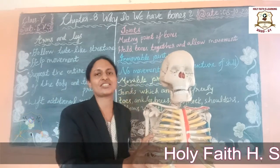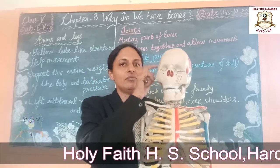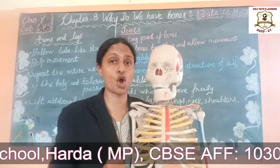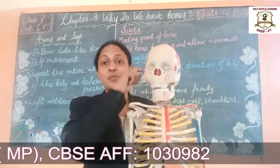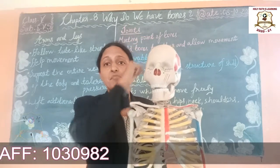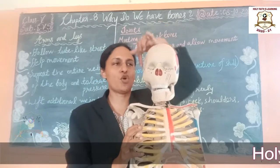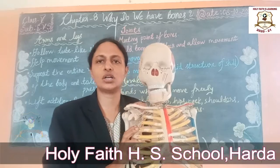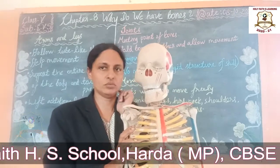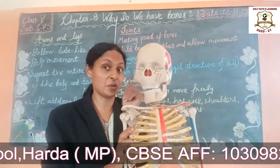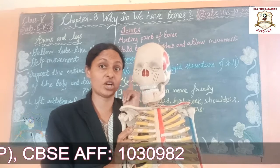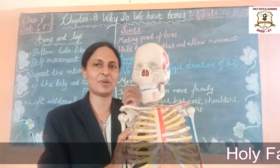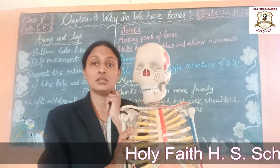An example of immovable joints is the rigid structure of the skull. We already learned about the skull — it is a rigid, hard and strong structure formed from several flat bones joined together. It cannot move because it protects the brain system, the very important commander of the body.